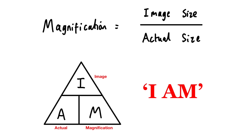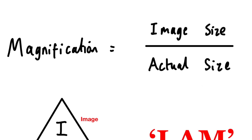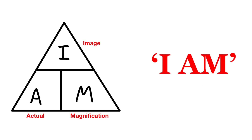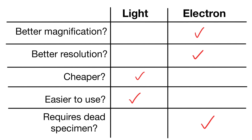Next we have microscopes. The main thing you focus on at GCSE is light microscopes. There is an equation: magnification equals image size over actual size, and you can remember it like this. It's also useful to know the advantages and disadvantages of light microscopes and electron microscopes. For example, light microscopes are easy to use and cheap, however the magnification and resolution on an electron microscope is far better.